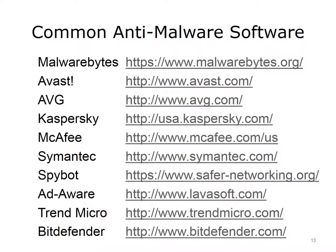Common anti-malware, or AM, software vendors include Malwarebytes, Avast, AVG Free, Kaspersky, McAfee, Symantec, Spybot, Adaware, Trend Micro, and Bitdefender. It is important to perform a web search for anti-malware software vendor rankings before investing in anti-malware software, as many computer magazines annually rank AM software vendors. It's a good idea to invest in the commercial version of reputable anti-malware software that includes automatic updates, rather than relying on a free version. The cost of $50 or $60 a year is nothing compared to the pain of having your personal data stolen or your computer's data held for ransom.